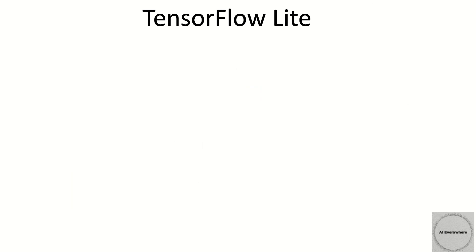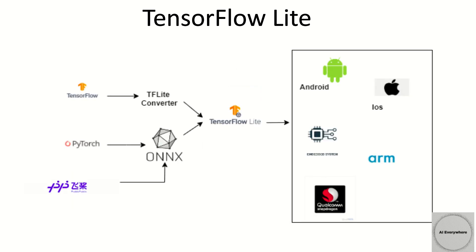We will go with the first one, which is TensorFlow Lite. These are the steps that usually take place when converting a model to TensorFlow Lite. The TF Lite converter is needed to convert a TensorFlow model to TensorFlow Lite, whereas ONNX format is needed to convert a PyTorch or Paddle Paddle model to TensorFlow Lite. Once converted, it can form optimized libraries for edge devices such as Android, iOS, embedded systems, etc.